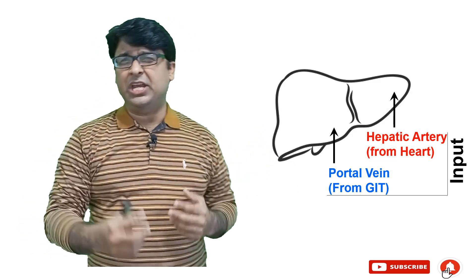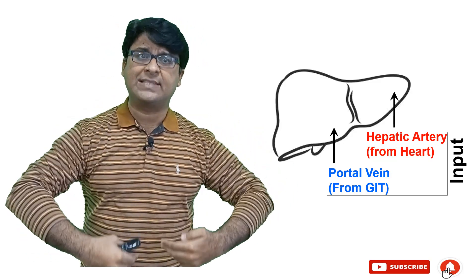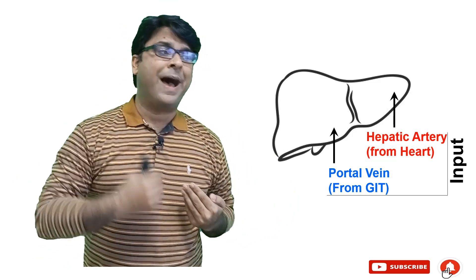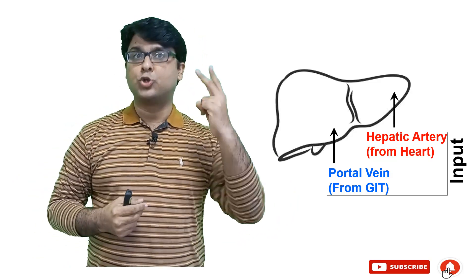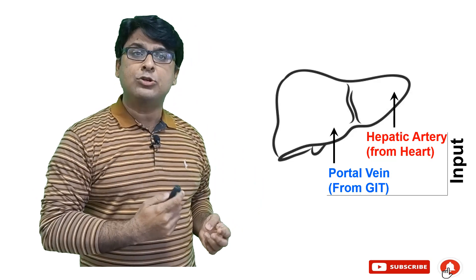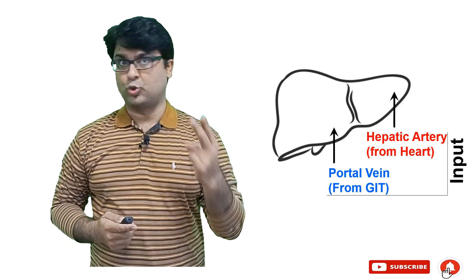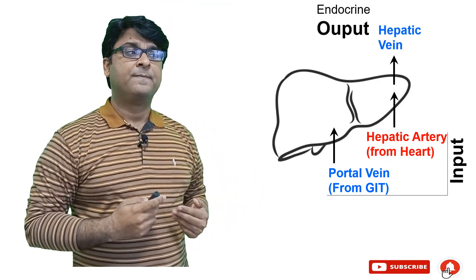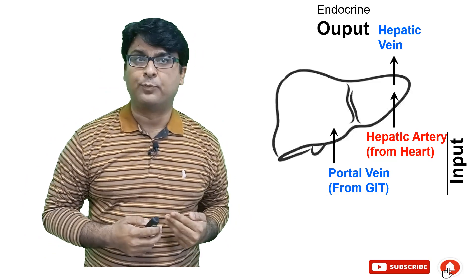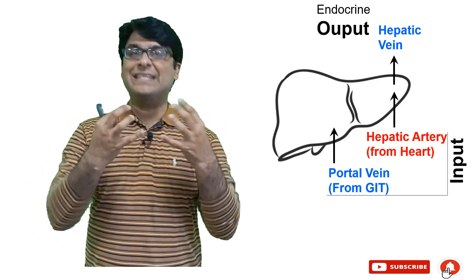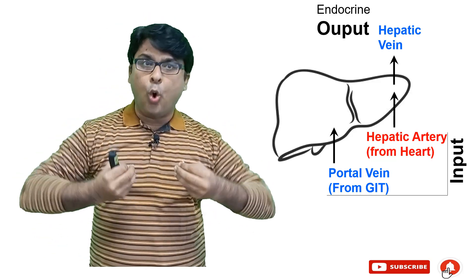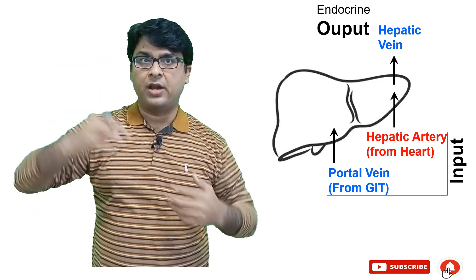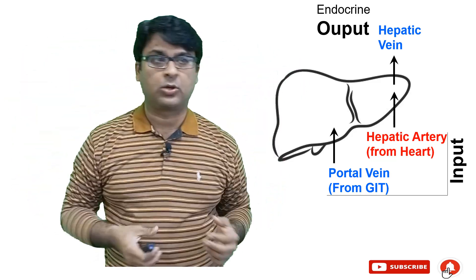Whatever you eat, all the drugs and such things, they enter the liver first via the hepatic portal vein. So there are two inputs. In terms of output, there are also two outputs. The first output is what we call the endocrine output, where whatever is synthesized in the liver goes into the bloodstream via the hepatic vein, which goes into the heart and then to the whole circulation.